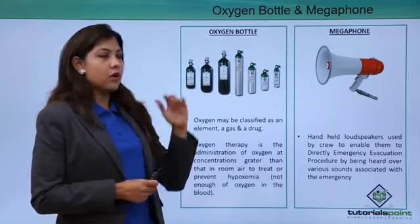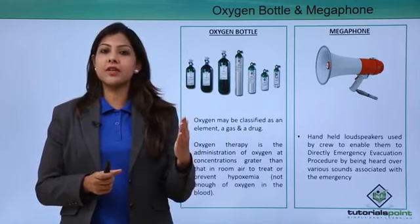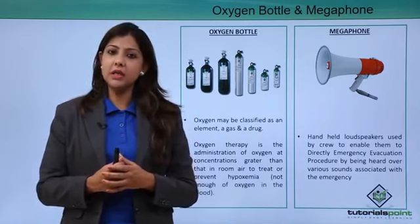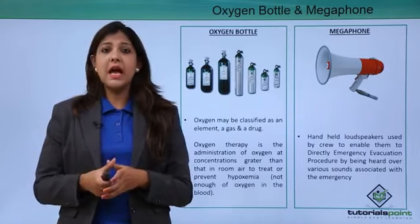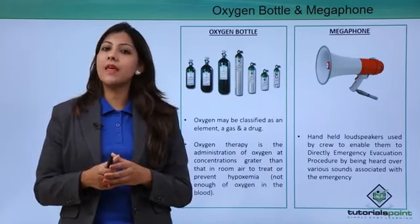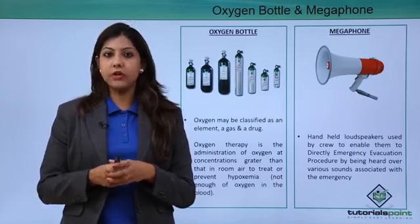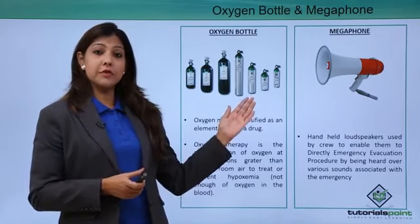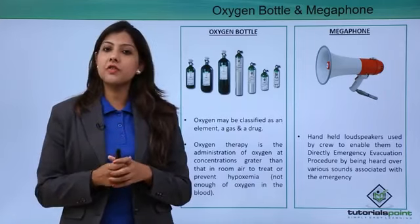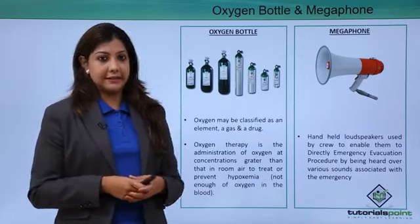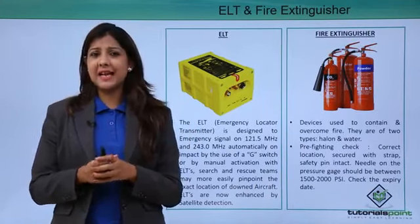The megaphone is located inside the cabin — one in the forward section and one in the aft section. The megaphone is typically used by cabin crew for crowd control and to make announcements when there is a power failure and the intercom is not working. It ensures that passengers can hear the instructions of the cabin crew loud and clear.